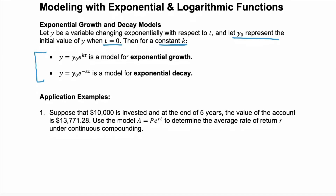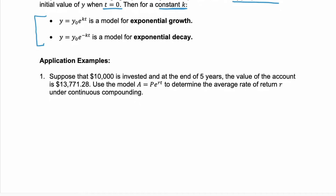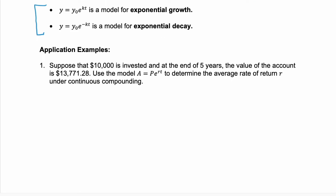Let's look at some examples. Suppose that $10,000 is invested and at the end of five years the value of the account is $13,771.28. We're going to use the model A equals P·e to the power of R·t to determine the average rate of return R under continuous compounding.